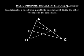Basic Proportionality Theorem, also known as Thales Theorem. In a triangle, a line drawn parallel to one side will divide the other two sides in the same ratio.